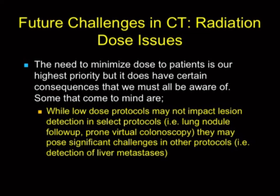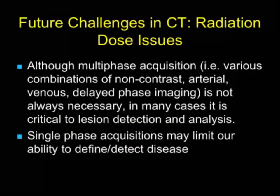One challenge with protocols is minimizing dose to the patient — people tend to cut corners, and not in a bad way. But we need to be certain that as we reduce dose, we don't reduce information. Certain studies are easy to reduce dose — lung nodule follow-up, virtual colonoscopy prone images. But with liver metastases, cutting dose too low or not doing dual-phase imaging means you're going to miss things. We need to make certain we do the study right the first time, doing every phase that is necessary without unnecessary phases.